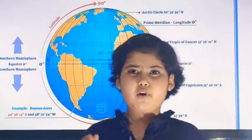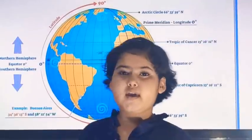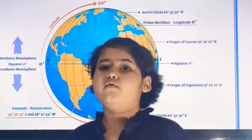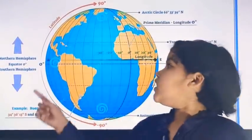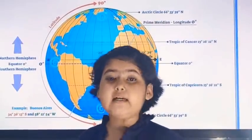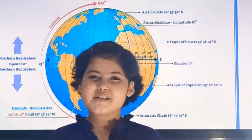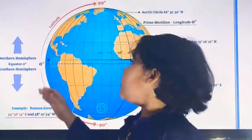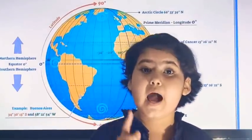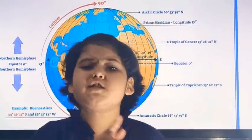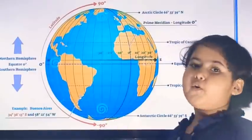Suppose you are standing on the 0 degree equator and after some time you are standing on the 1 degree latitude. The distance between the 0 degree equator and 1 degree latitude is about 111 km. You must know this because it may come in your exams.